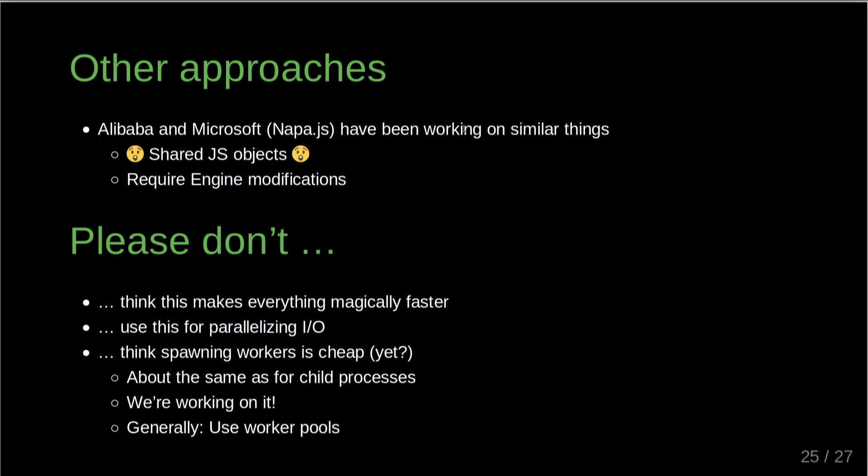Just to quickly mention — people have built other things in this direction. Alibaba has built a variant of V8 that allows sharing objects, as has Microsoft. The Microsoft version is called NabaJS. So you can actually share JS objects between threads, which is amazing, but it requires engine modifications and we're not in a position to do anything about that directly in Node. I don't think this is going to make anything magically faster — worker threads come with the overhead of constructing workers. If you do use them, think about using a worker pool, or there are NPM modules that provide a worker pool for you, like Microjob.